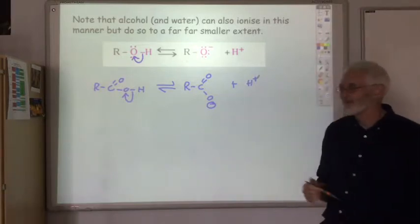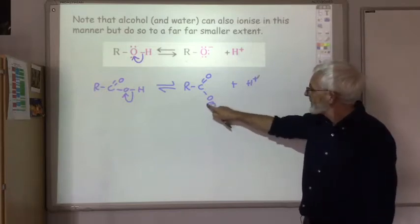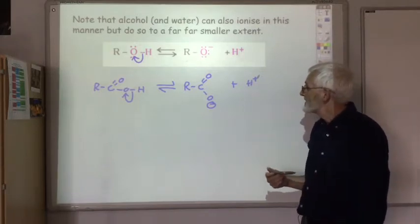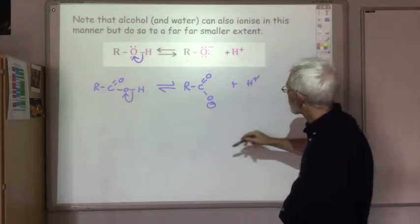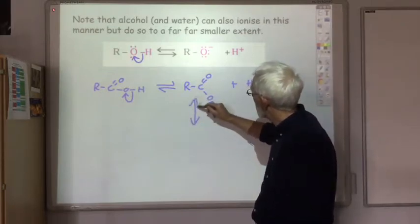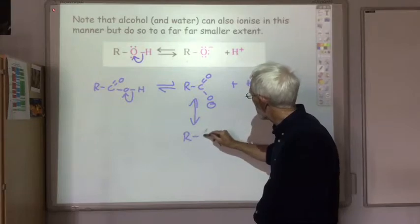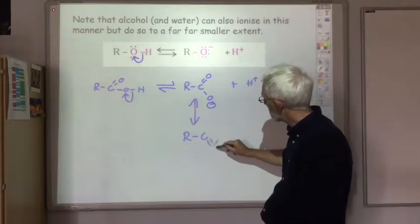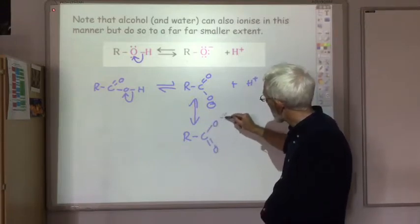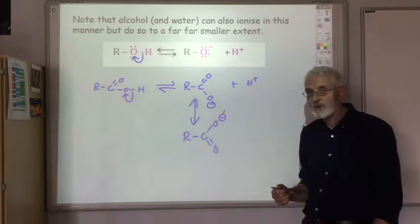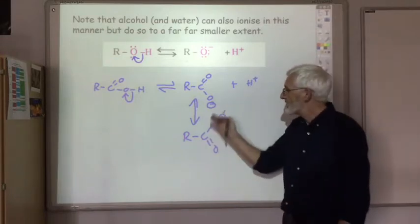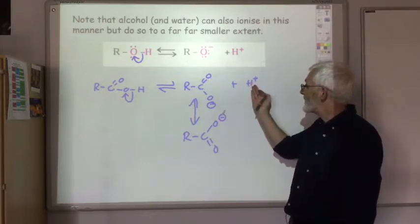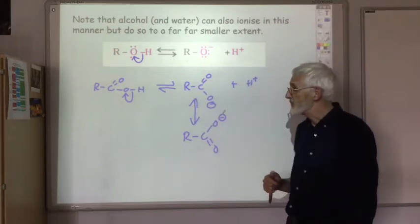It does this to a far lesser extent in this case, and this is because this negative charge can move around the ion. This can vary between the negative charge being on that oxygen, and the negative charge being on that oxygen. And this delocalisation of the charge gives this carboxylate ion extra stability, so it's less likely to recombine with H plus ions to form the carboxylic acid molecule.